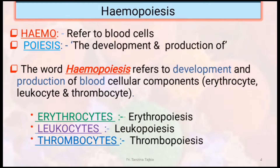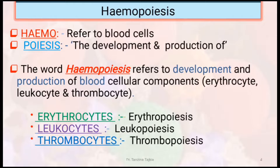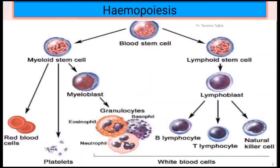Here, hemo means blood cell and poies means development and production. If I say this term individually: in case of RBC, this is called erythropoiesis; in case of WBC, this is called leukopoiesis; and in case of platelet, this is called thrombopoiesis.